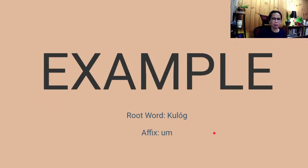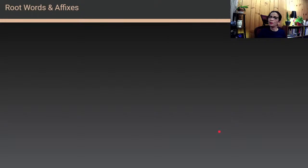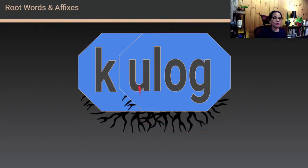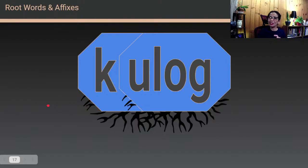Let's look at what happens when kulog and um come together. With kulog, you need to separate the first letter of the root word. So we animate the process — take the root word kulog, and separate the first letter, which is k, from the rest.